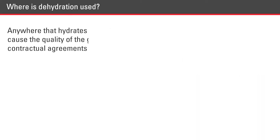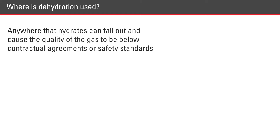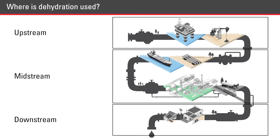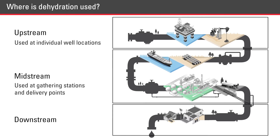Gas dehydration takes place anywhere natural gas contains water vapor which could cause the quality of the gas to be below contractual agreements or safety standards. All three sectors of the oil and gas industry use dehydration, including upstream at individual well locations, midstream at gathering stations and delivery points, and downstream at processing plants.